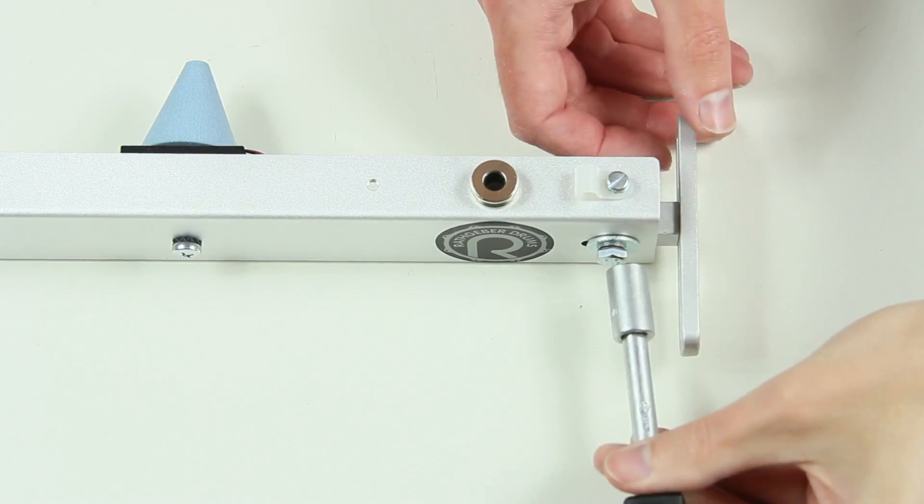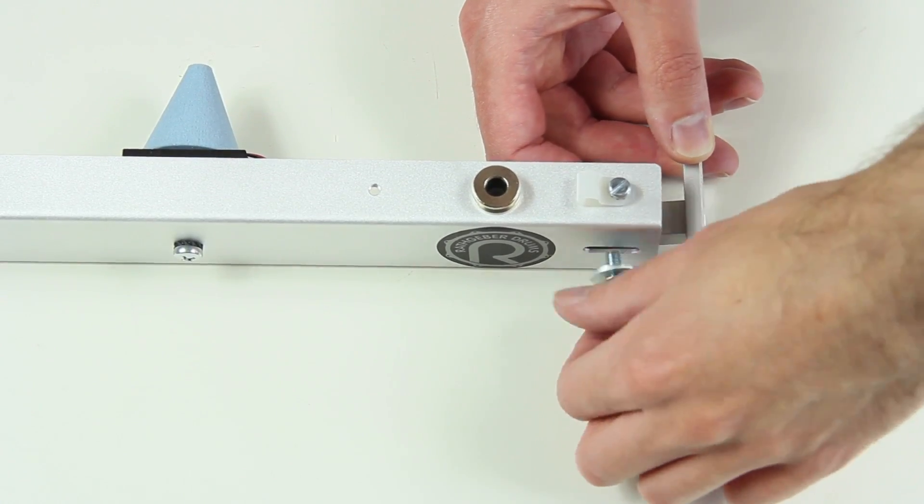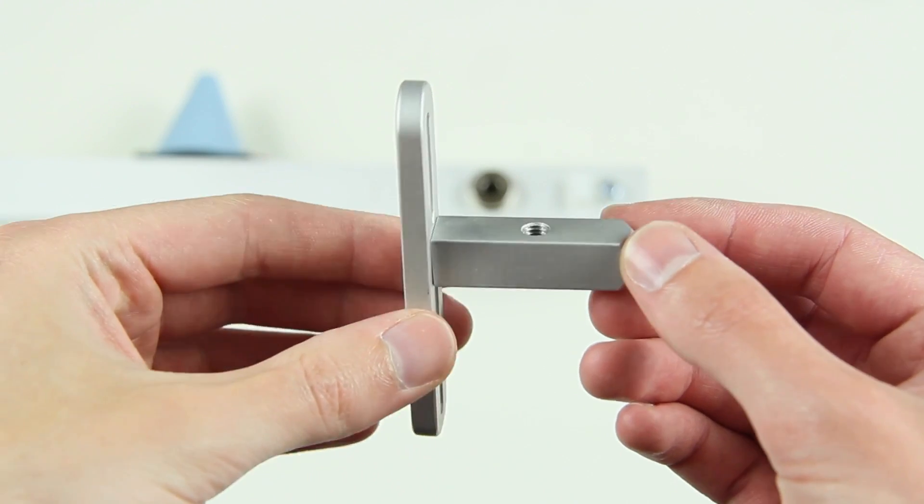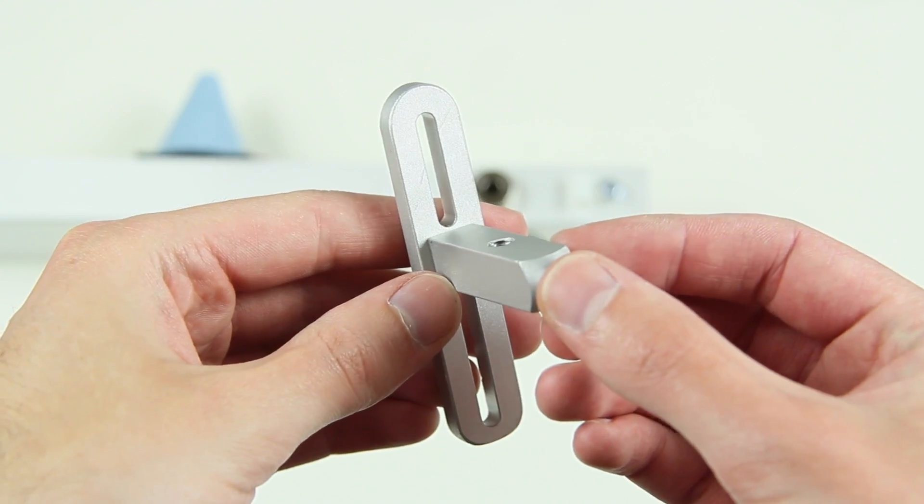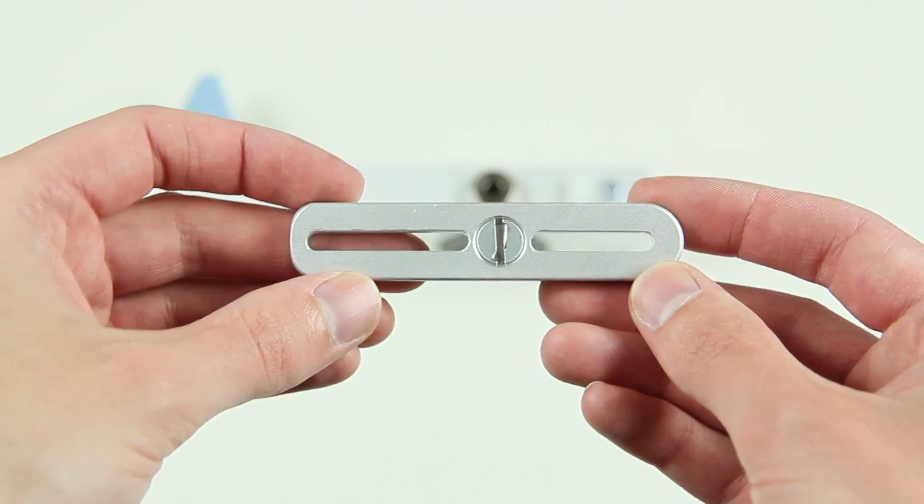These two brackets need to be removed first. They have two long slotted holes that make it possible to install it into almost every drum shell, no matter how the lock screws are placed.